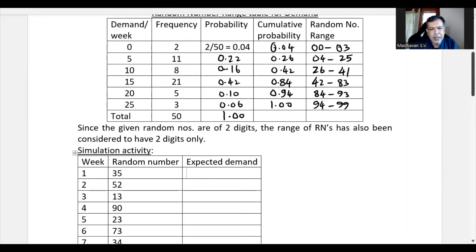And then 52 lies here which is 15. So demand per week is 15 for that and then 13 random number. It lies here and the corresponding demand is 5. Then 90, 90 comes here which is 20 and then 23 which comes here 5 and then 73. 73 is lying between these. That means it is 15.